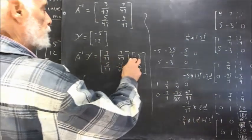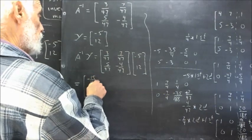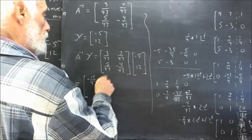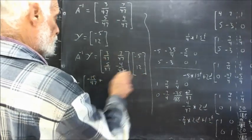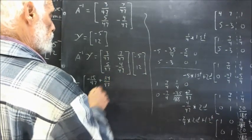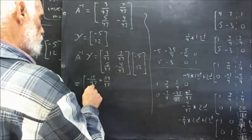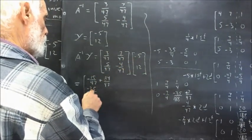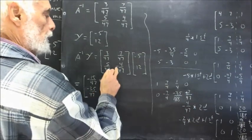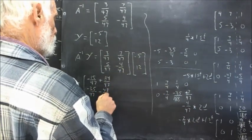3 over 47 times negative 5 is negative 15 over 47. And then we add 7 over 47 times 12, and that's 84 over 47. Then, 5 over 47 times negative 5 is negative 25 over 47. Negative 4 over 47 times 12 is negative 48 over 47.